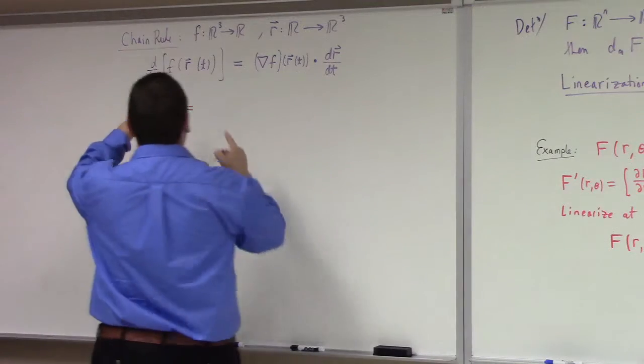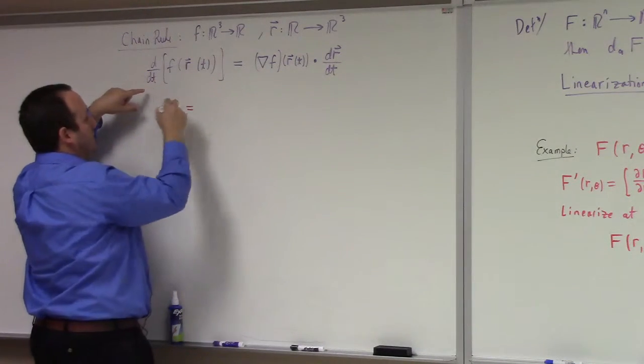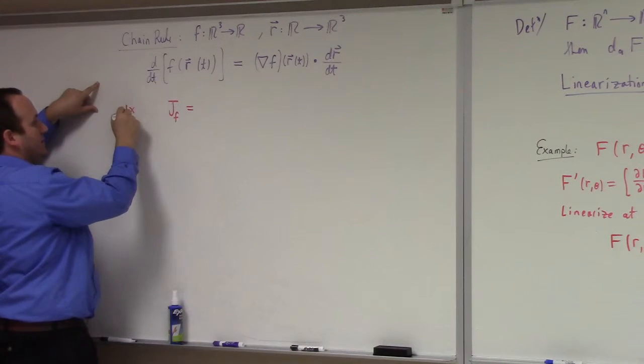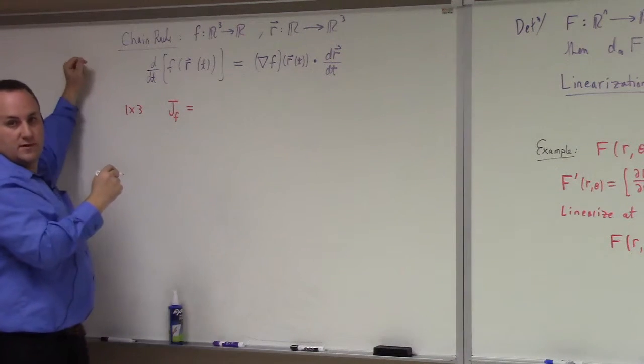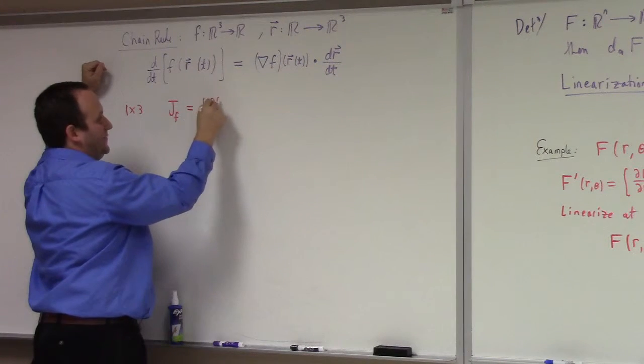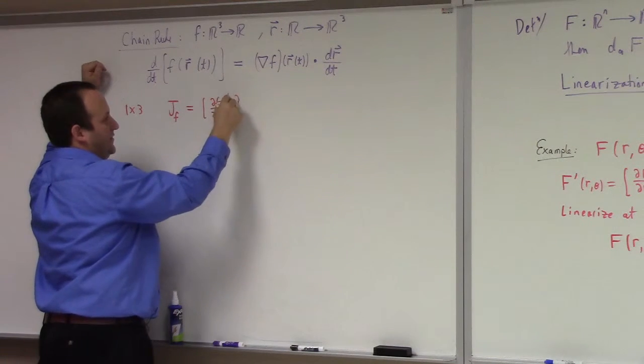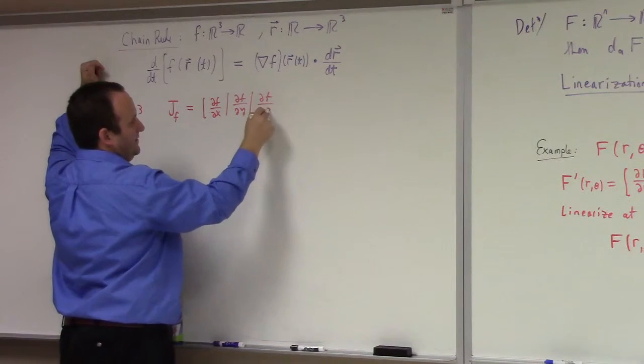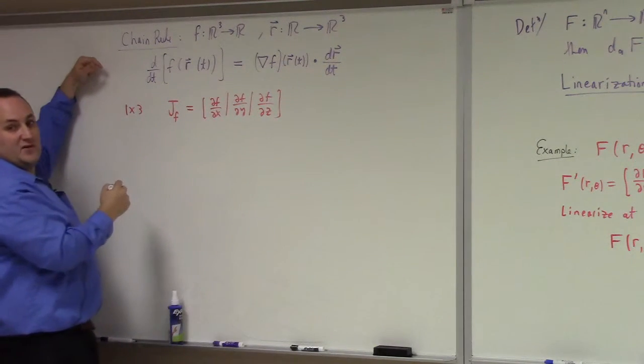So what we're looking for here, 1 by 3 actually, it goes backwards. The Jacobian then is partial F partial X, partial F partial Y, partial F partial Z. That's the Jacobian of F.